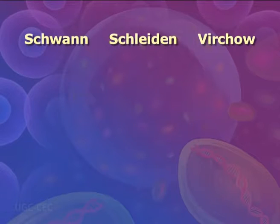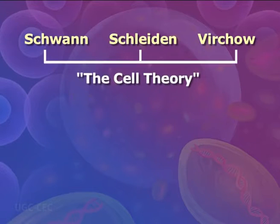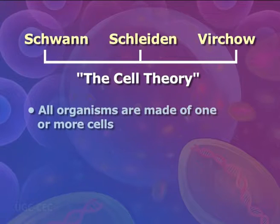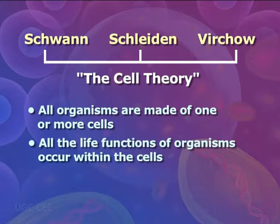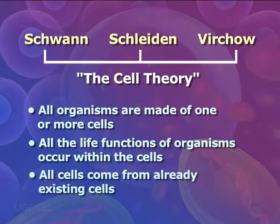The ideas of all three scientists — Schwann, Schleiden, and Virchow — led to the Cell Theory, which is one of the fundamental theories of biology. The Cell Theory states that: all organisms are made of one or more cells; all the life functions of organisms occur within cells; and all cells come from already existing cells.